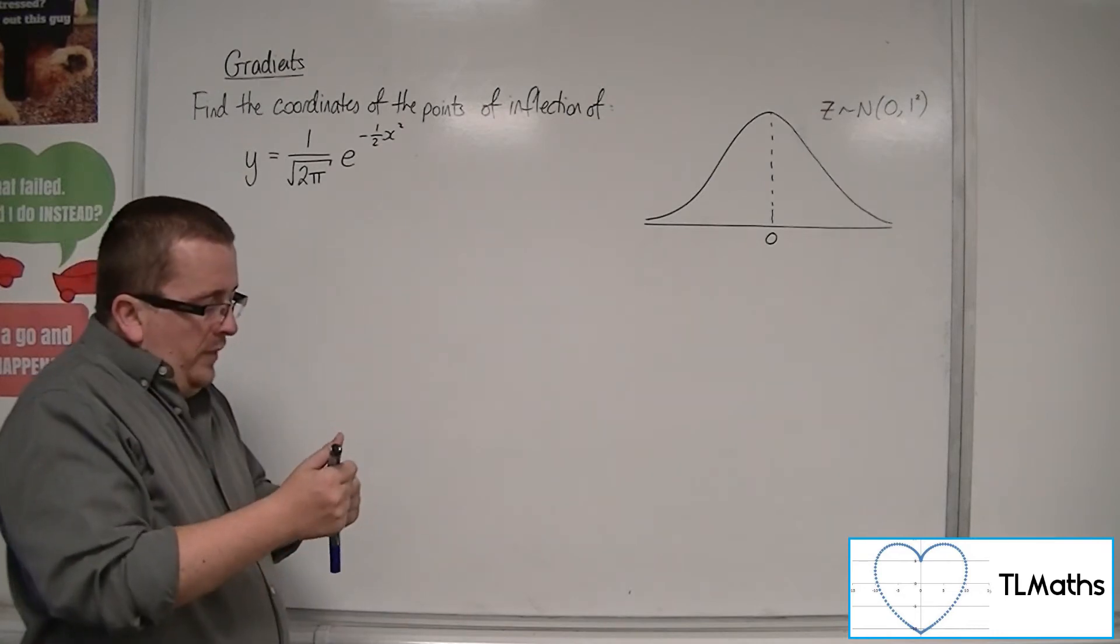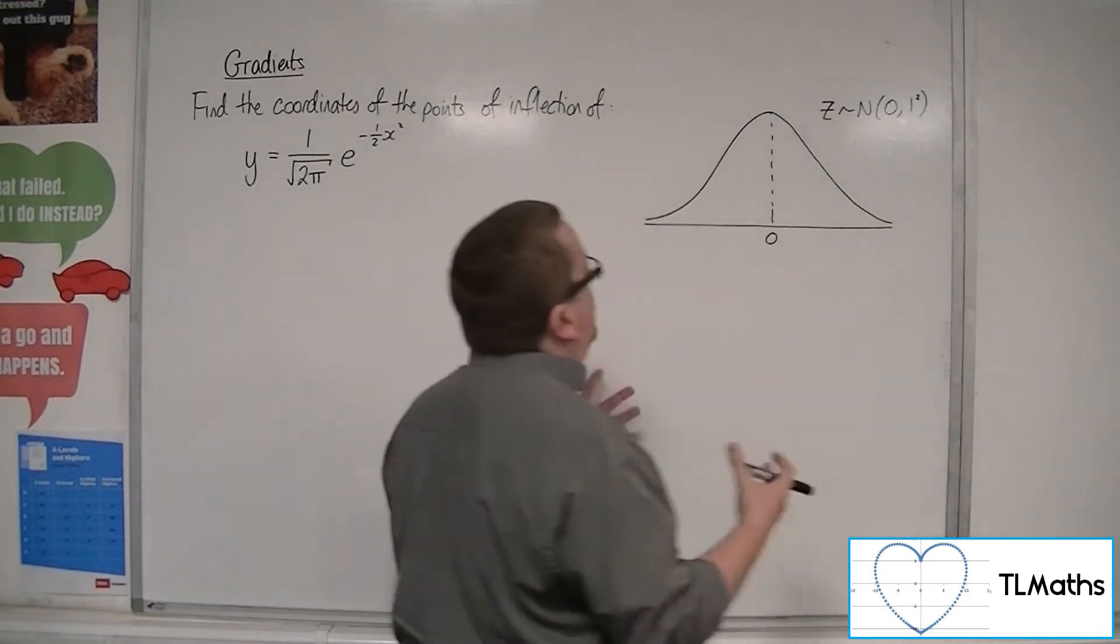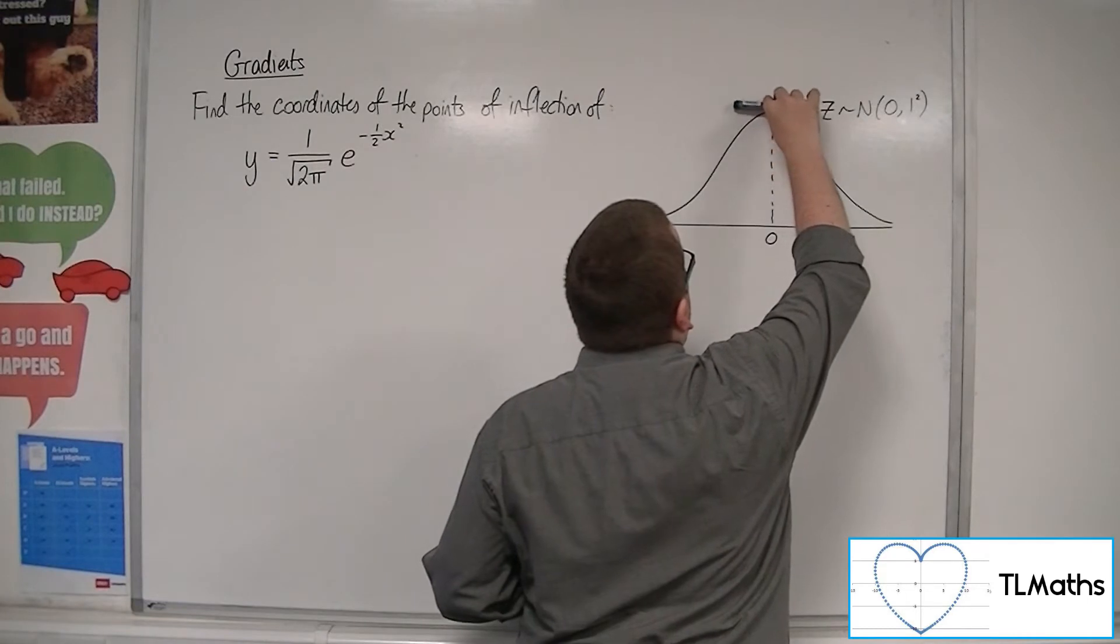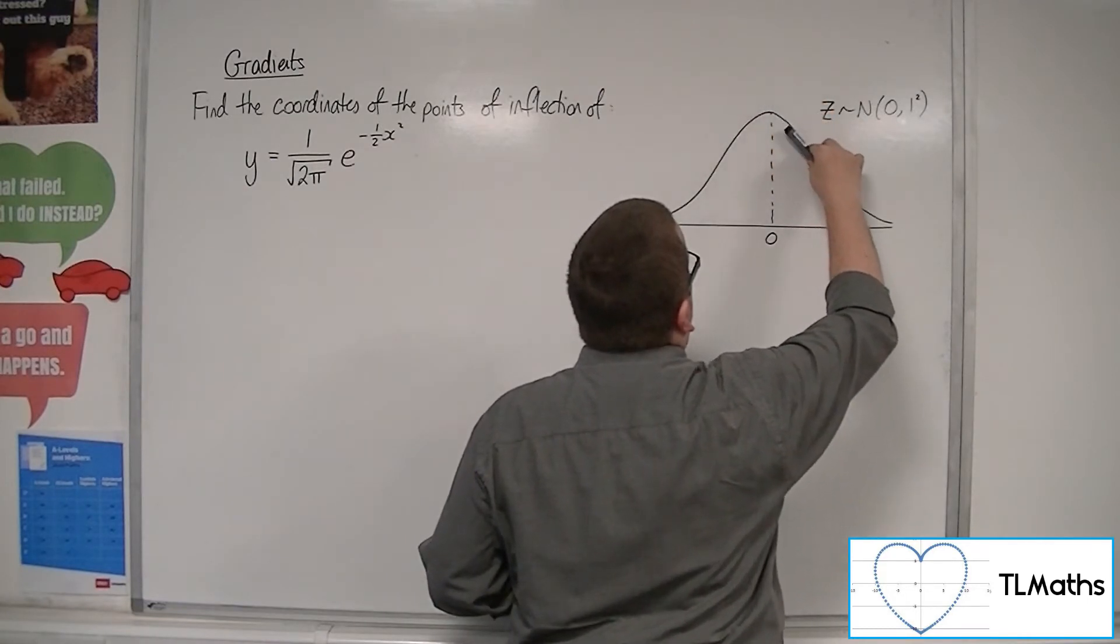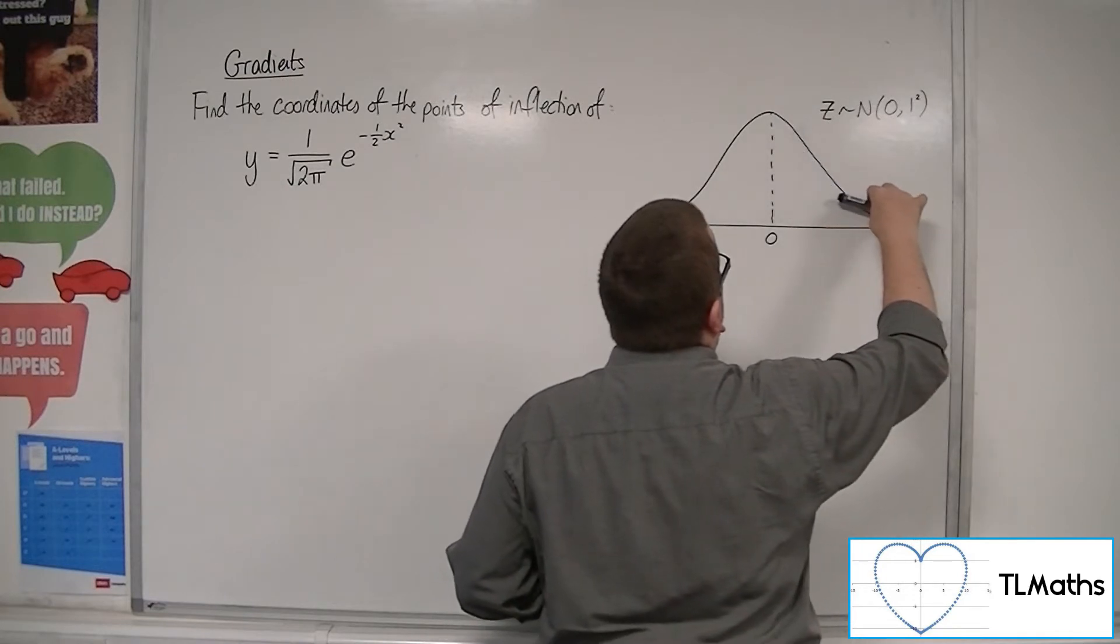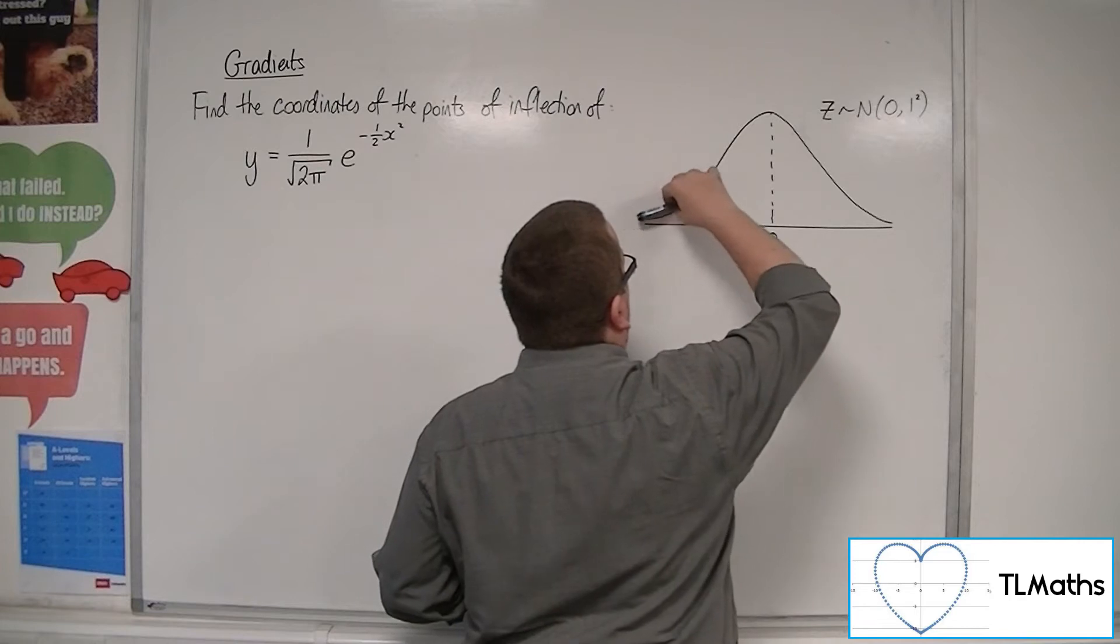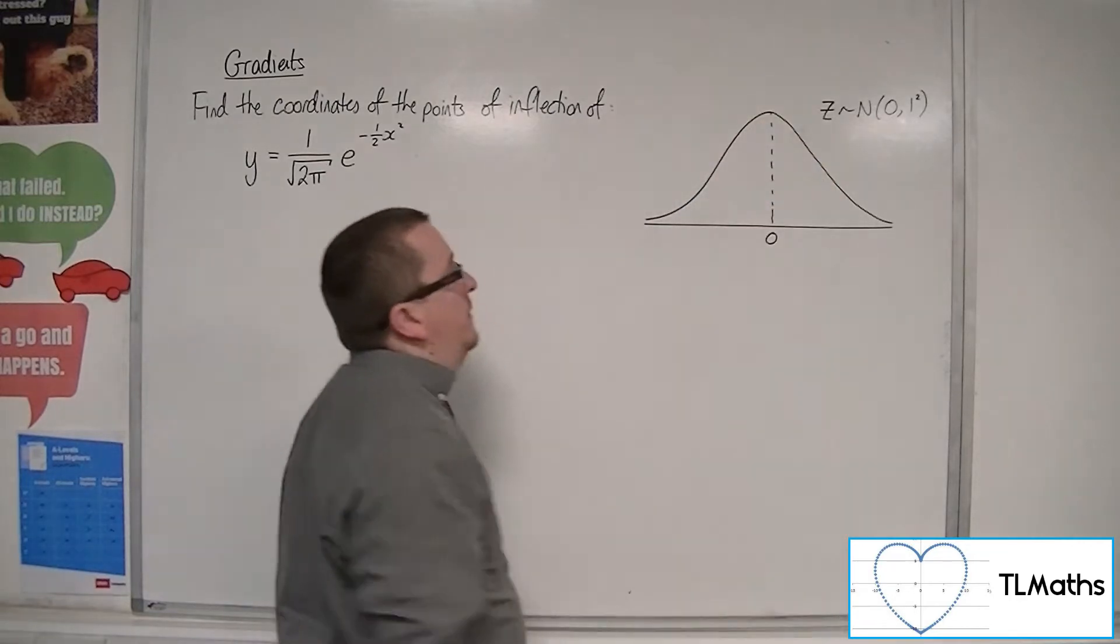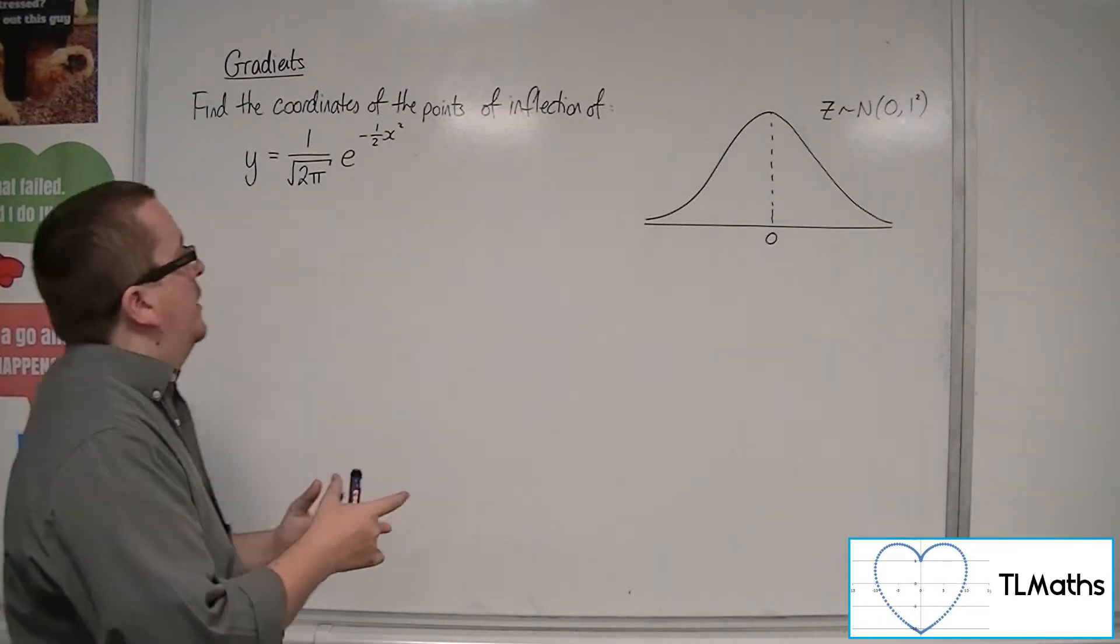So it has two points of inflection. Here you've got the curve, it's coming around, it's going clockwise, and then there must be a point where it goes to anti-clockwise. Likewise, coming around here, it's going anti-clockwise, and then it becomes clockwise. So there must be two points where there is that turning.